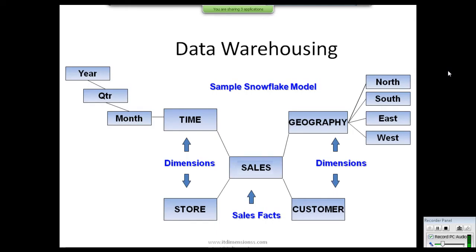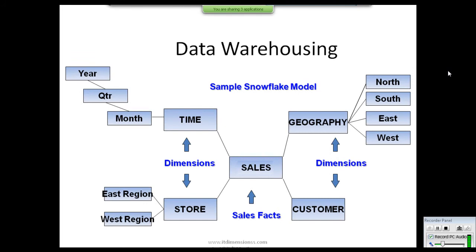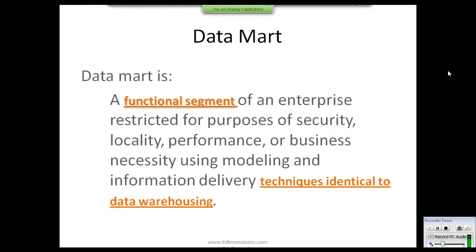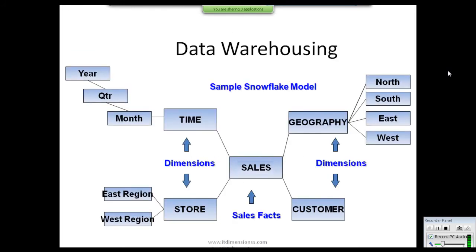The dimension table can be normalized — we will learn normalization later, so don't get confused about it. Geography can be divided into north, south, east, and west. Stores can be divided into east and west regions. When we connect all these tables together, it looks exactly like a snowflake — that's why this is known as a snowflake schema.